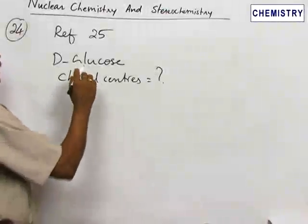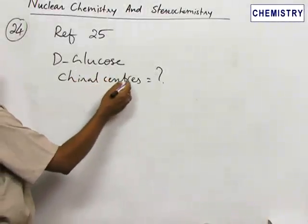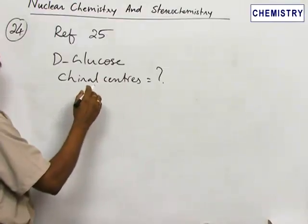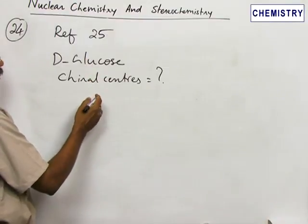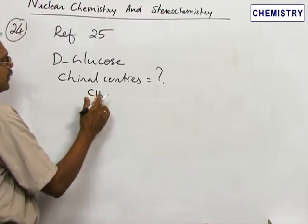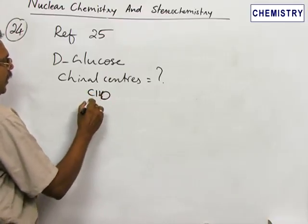Reference 25: In D-glucose, how many chiral centers are there? That we have to find out. This glucose is what's called an aldohexose. At the top, there's an aldehyde functional group, that is a CHO functional group.